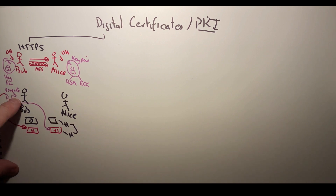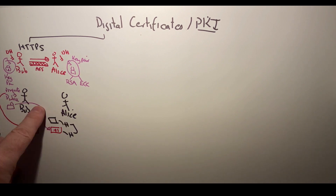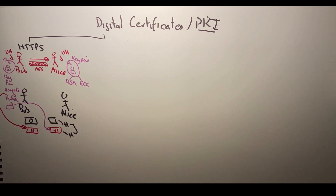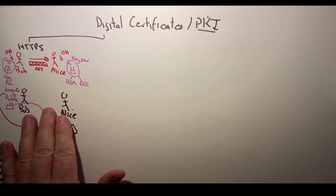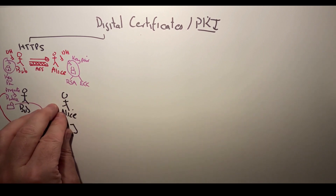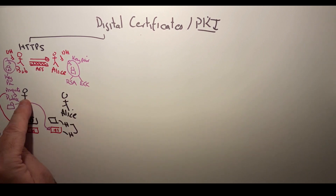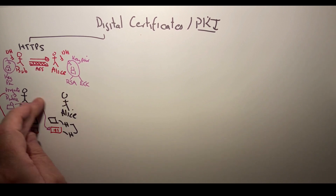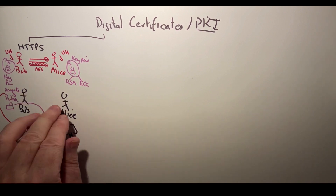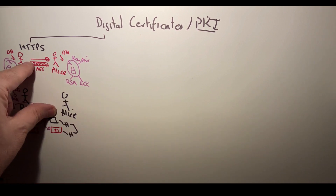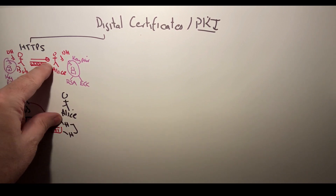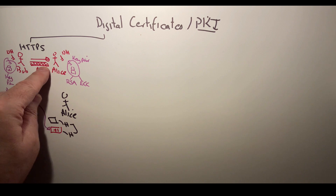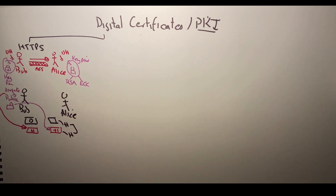It's this key pair which makes sure that we can identify Bob to Alice. We can also use public key encryption to encrypt data between Bob and Alice, though most of the time we use symmetric key for that.